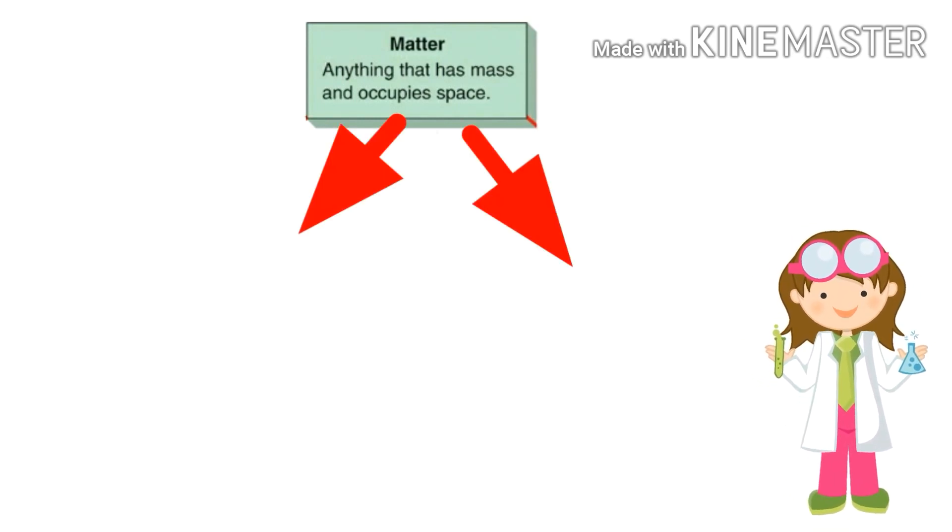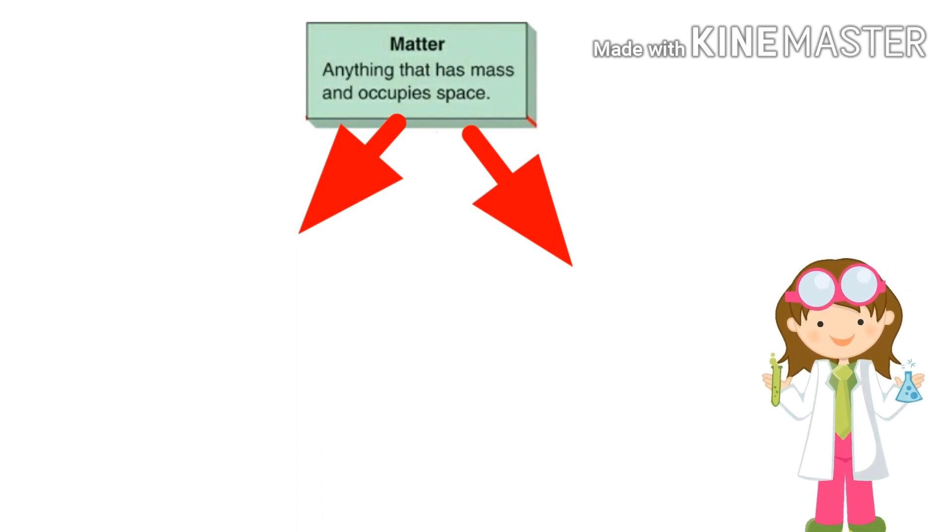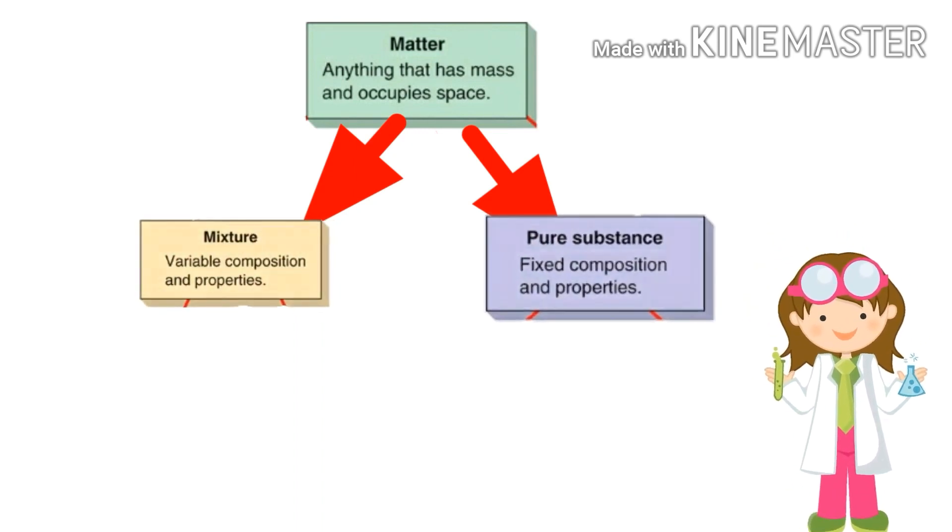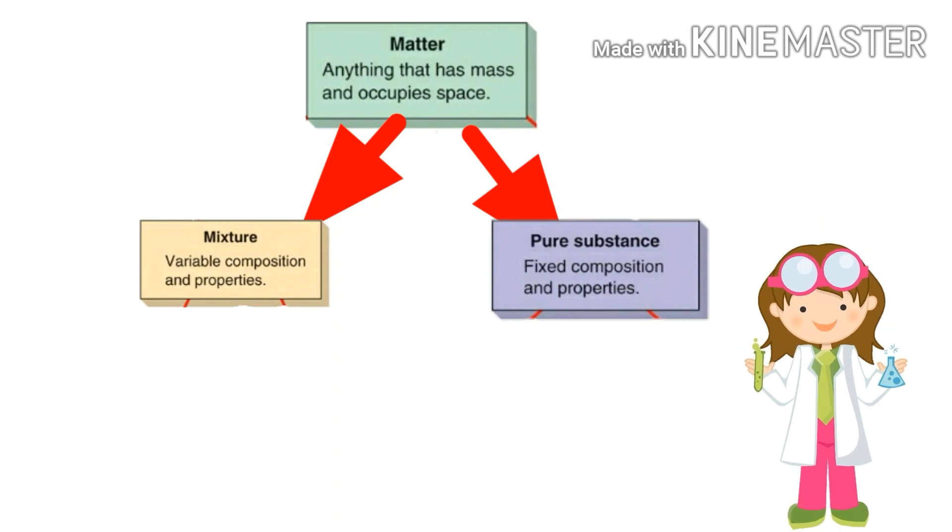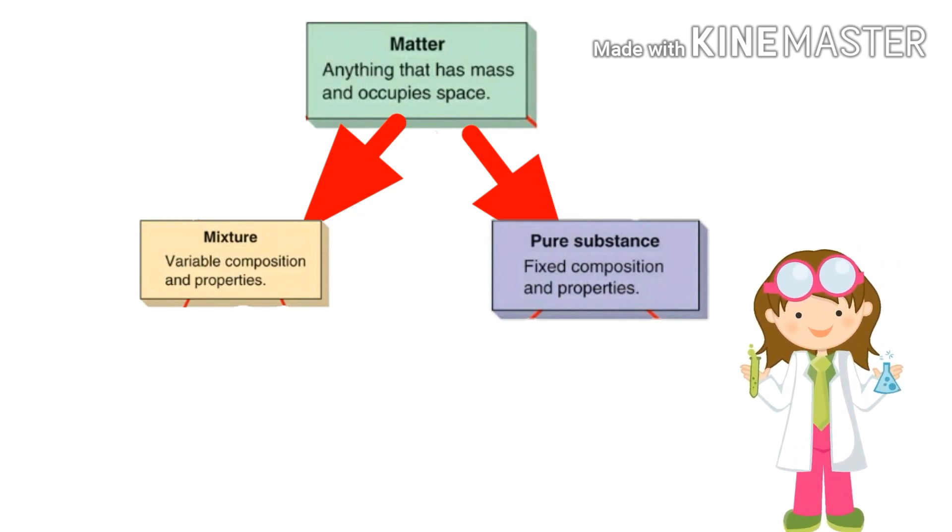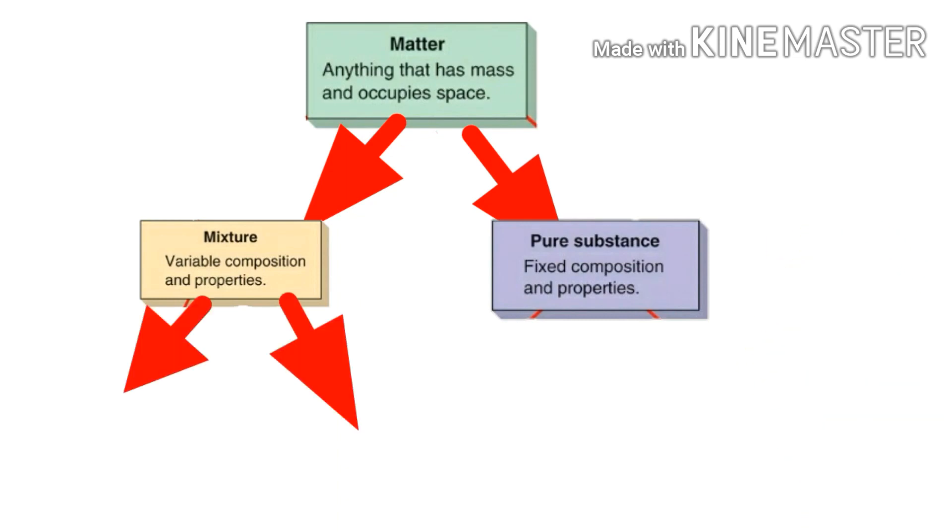Matter is classified in several ways, like mixture and pure substance. Mixture has variable composition and properties and is classified as homogeneous and heterogeneous mixtures.